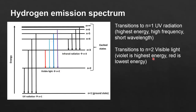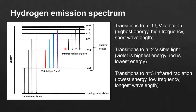In visible light, violet is the highest energy with the highest frequency and shortest wavelength, while red is the lowest energy with the lowest frequency and longest wavelength. Finally, electron transitions to n equals 3 correspond to infrared radiation, which is the lowest energy of the three, with the lowest frequency and the longest wavelength.